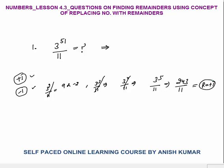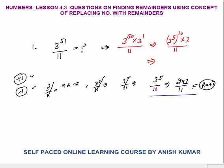Now we replace the number with its remainder. Since 3^5 ÷ 11 gives remainder 1, I will break 3^51 as 3^(5×10) × 3^1. Writing it as (3^5)^10 × 3 ÷ 11, I replace 3^5 with its remainder 1, keeping all signs and the product as is. So the result is 1^10 × 3 ÷ 11, and the final remainder is 3.